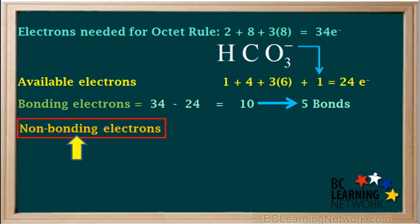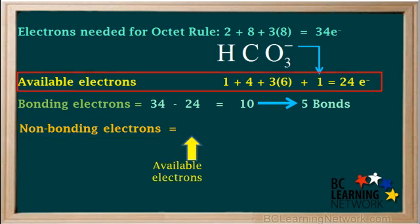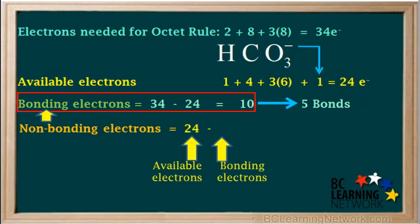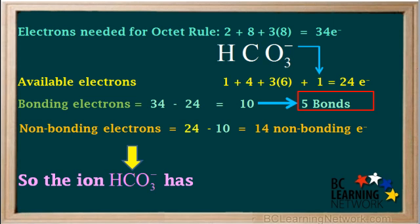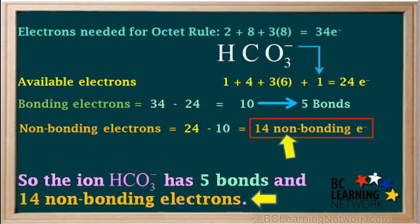The next step is to calculate the number of non-bonding electrons in this ion. We do that by taking the number of available electrons, which is 24, and subtracting the number of bonding electrons, which is 10. 24 minus 10 gives us 14 non-bonding electrons. So the ion HCO3- has five bonds and 14 non-bonding electrons.